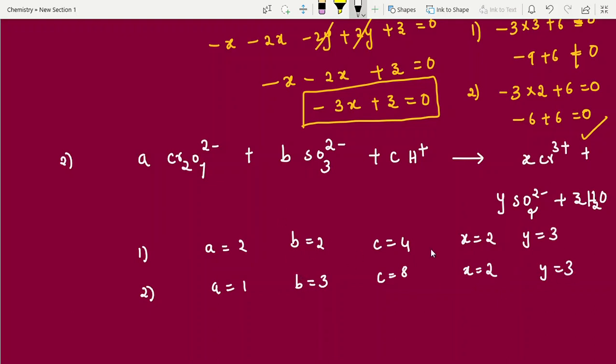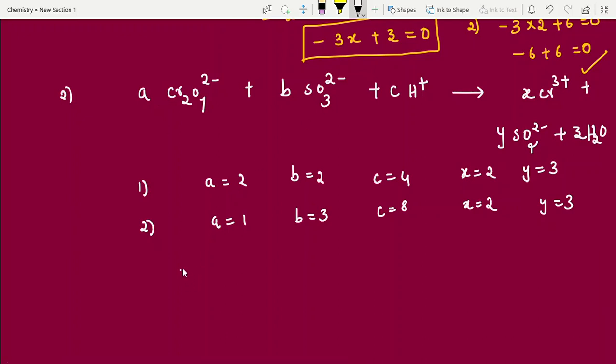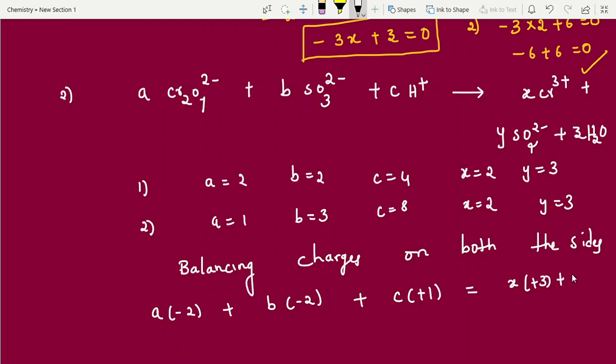Just two options I had given. Easily we can work out and check in. So how to solve this question. Tell me students. Yes. Charges. Balancing charges. Balancing charges on both the sides. Now write. A into minus 2 plus B into minus 2 plus C into plus 1, that is equal to X into plus 3 plus Y into minus 2 plus 0. That is water. Water neutral molecule is 0.